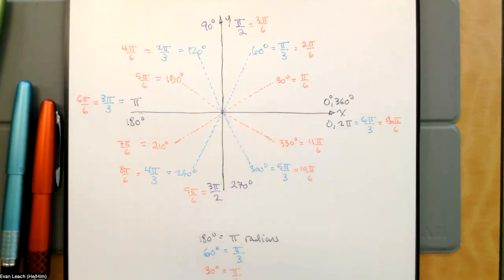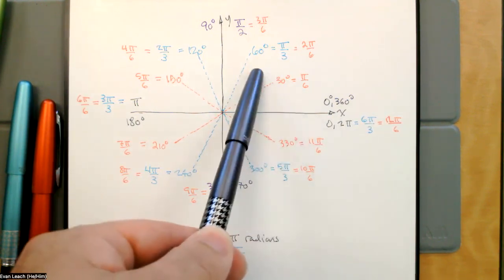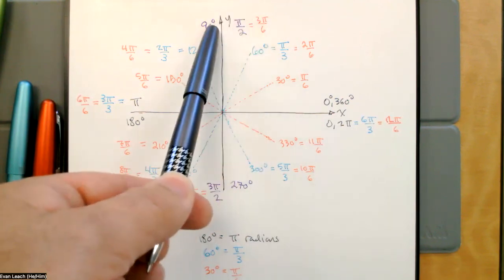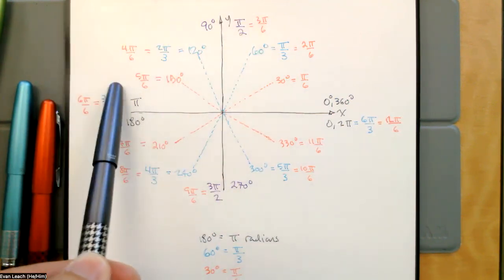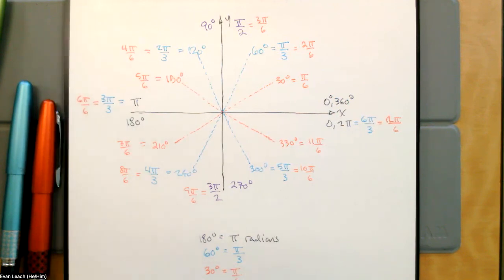All you have to do now is learn that around in radians: pi over 6, pi over 4, pi over 3, pi over 2, 2 pi over 3, 3 pi over 4, 5 pi over 6, pi. Just learn to count in the fractions.